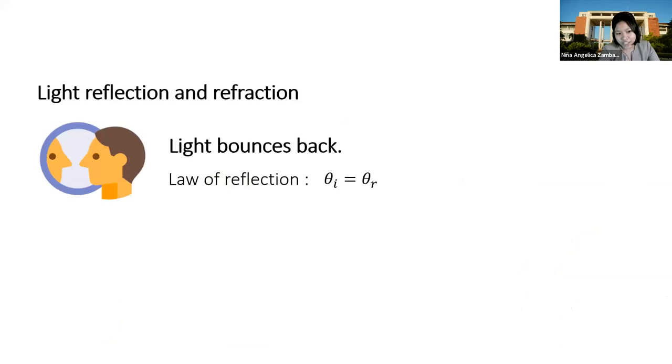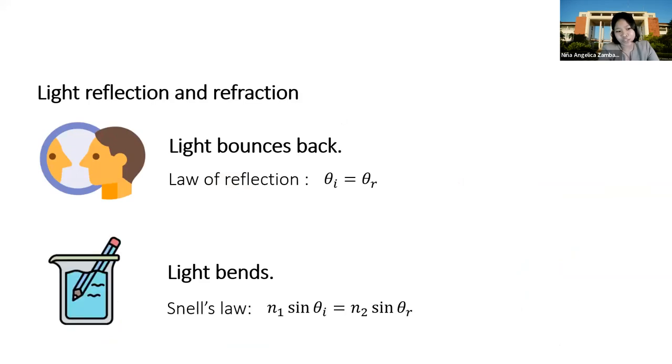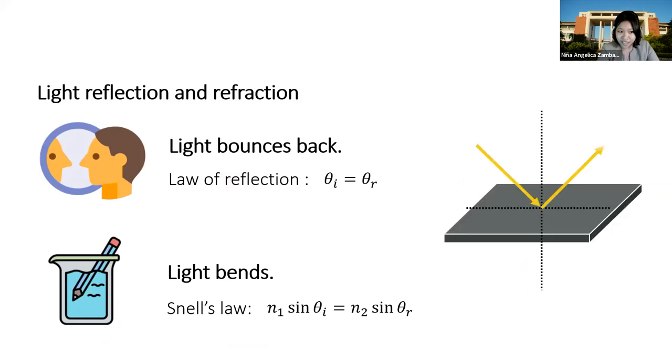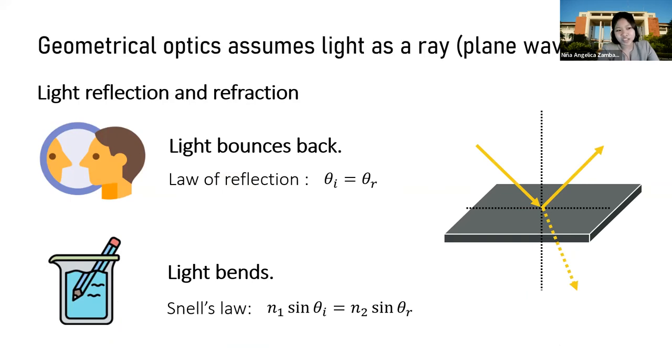Essentially, as early as our high school physics, it was already taught to us that light striking an interface can be reflected or refracted. By law of reflection, light bounces back, and by law of refraction, it bends. An underlying assumption of these two laws is that the incident light is a ray, or technically what we know as a plane wave. Generally, all phenomena described as geometrical optics assumes that light is a ray.